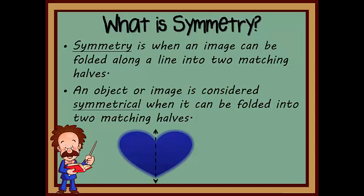Symmetry is when an image, shape, or object can be folded over a line into two matching halves. So if an object can be folded into two matching halves, it is considered to be symmetrical. As you can see, this heart is symmetrical because when it is folded in half, both of its sides will match up perfectly.